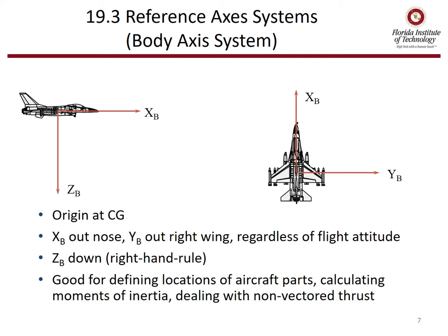The body axis system has its origin at the center of gravity. The X-body axis points out the nose, Y-body out the right wing, and Z-body down, and we use the right-hand rule. This is good for defining locations of aircraft parts, calculating moments of inertia, and dealing with non-vector thrust.